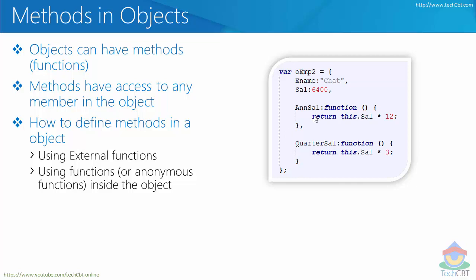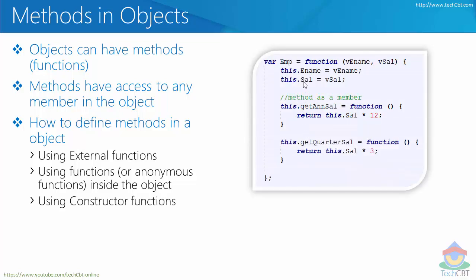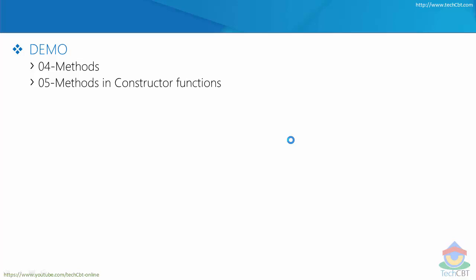It is easier to understand where the function will be executed and how it accesses the respective members. If you are using constructor functions, as covered in the previous class, you can still define methods the same way. Just like other members in a constructor function, methods are defined as members — except that all members inside a constructor function must always be preceded with the keyword `this`.